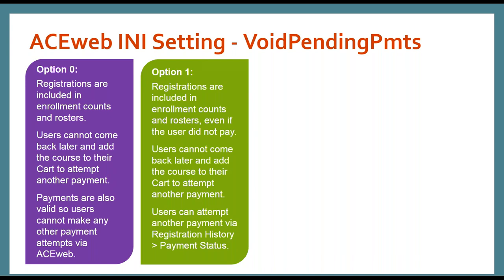For option one, the registration is still left alone, but the payment is going to be voided. This means the registration is still going to take up that seat and tick down the enrollment count, which would prevent the user from adding that course to their cart. However, they can go to their registration history, click the payment status button, and actually pay for that registration — making it a good, valid registration and payment. This is where it allows the student to correct some of this on their own.